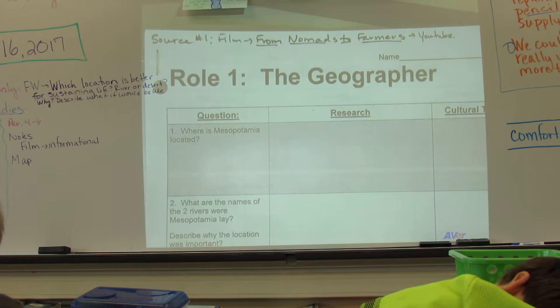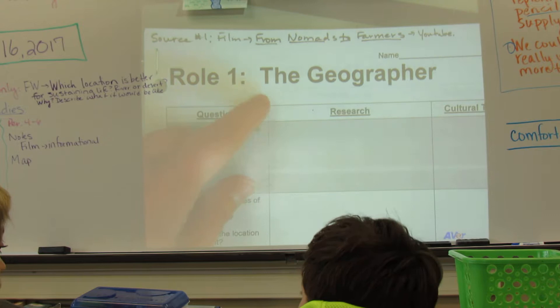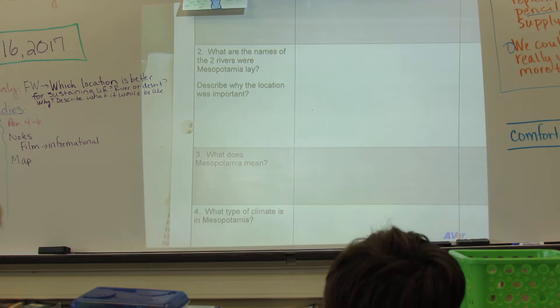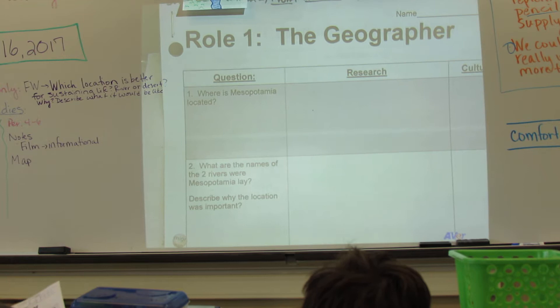You can rewind as much as you need to. So the first set of questions have to do with you being a geographer. So you're going to talk about where it's located. What are the names of the rivers? Describe why the location is important. What does Mesopotamia mean? What type of climate is in Mesopotamia? What present day country?